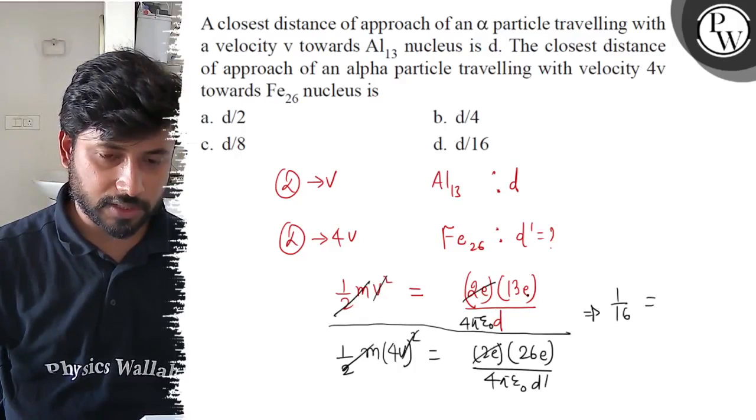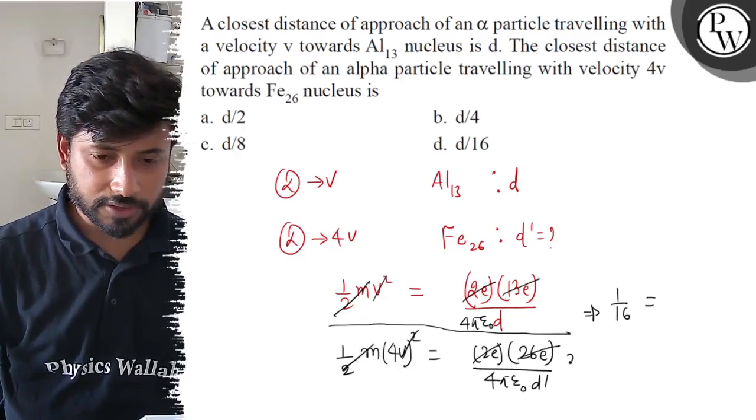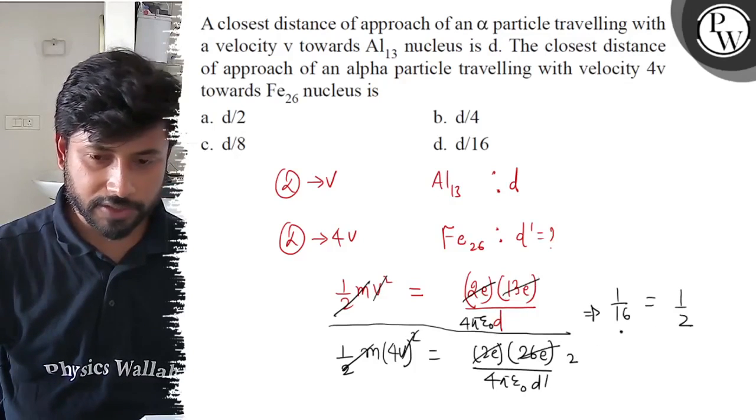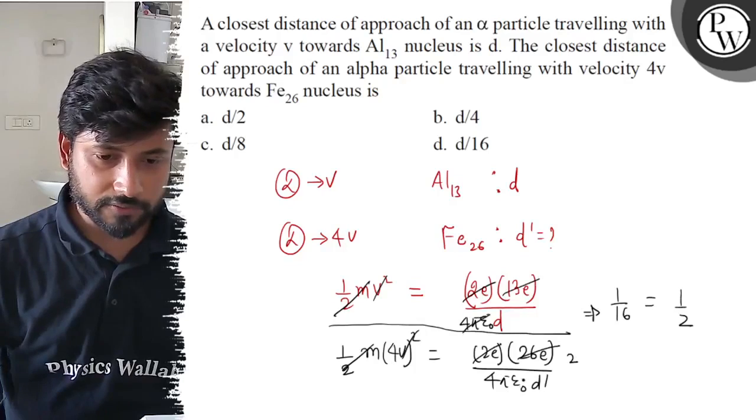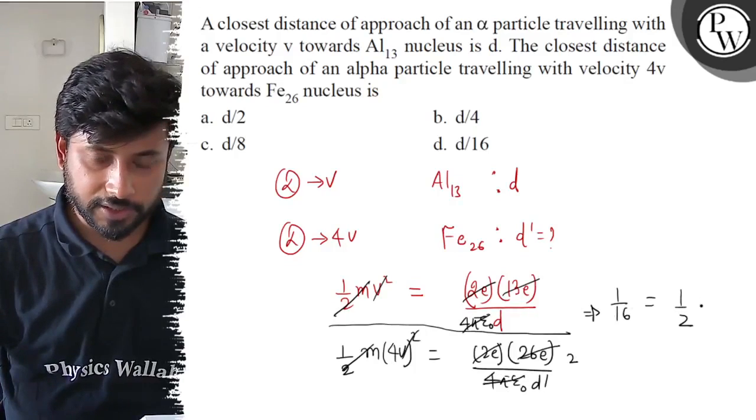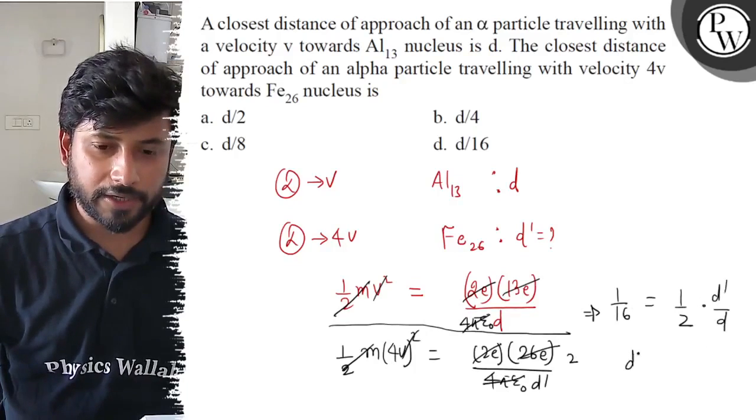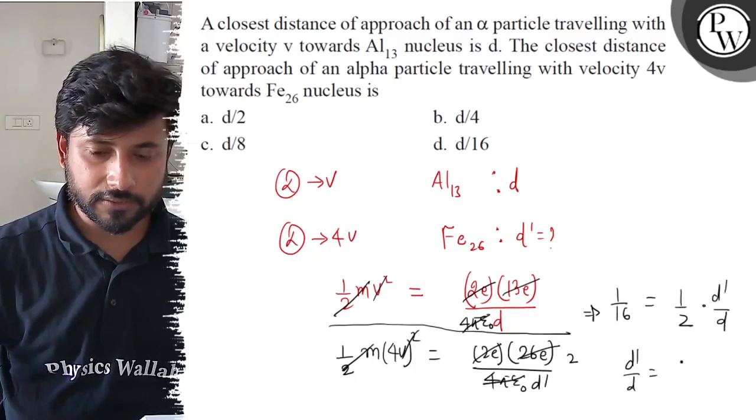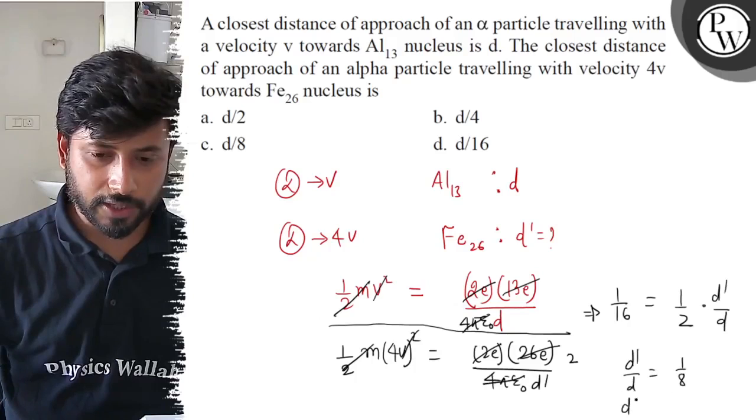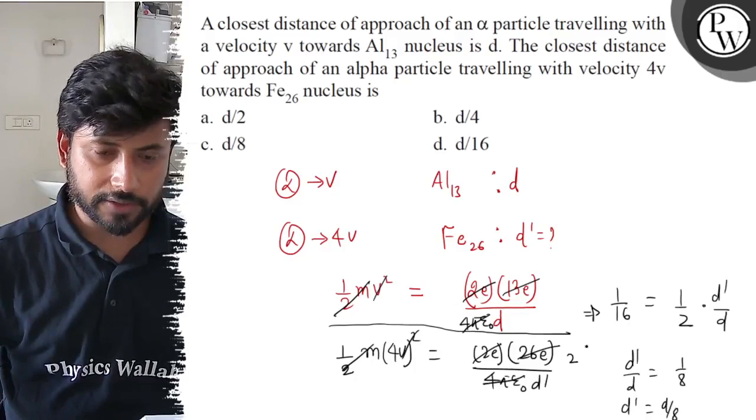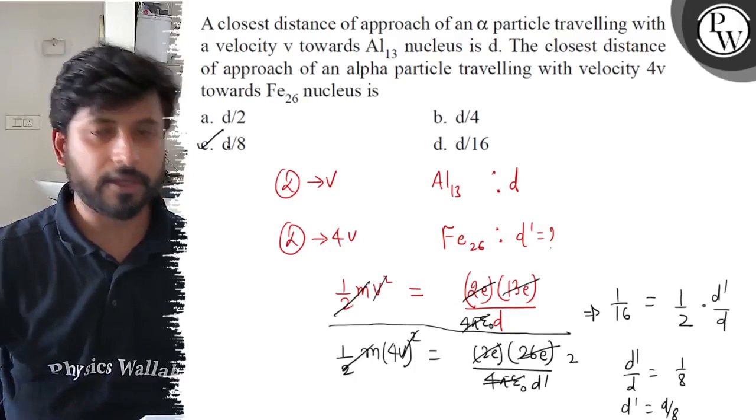2 epsilon_0 and 2 epsilon_0. After 13 to 26, 2 times, so 4 epsilon_0. D' by D. Now D' by D is 1 by 8. So D' is D by 8. So final answer is Option C: D by 8. Best of luck.